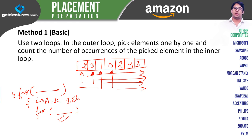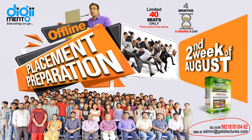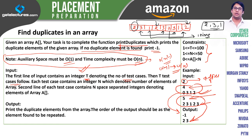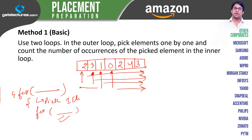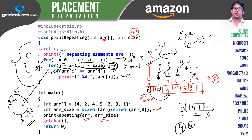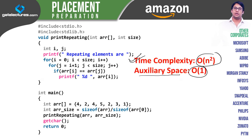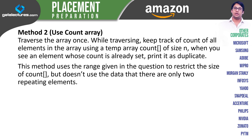As we asked in the problem, the space complexity should be O(1) and the time complexity should be O(n). Therefore this solution does not solve our problem. Let us analyze the second solution — in this solution we are going to use a count array.